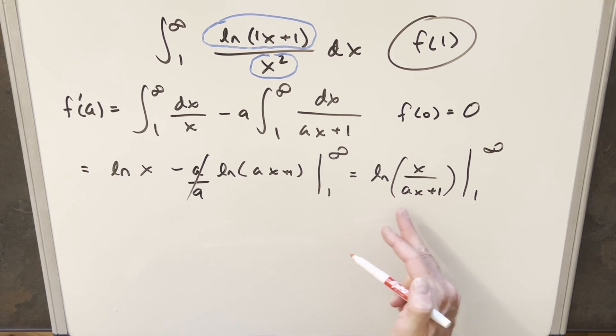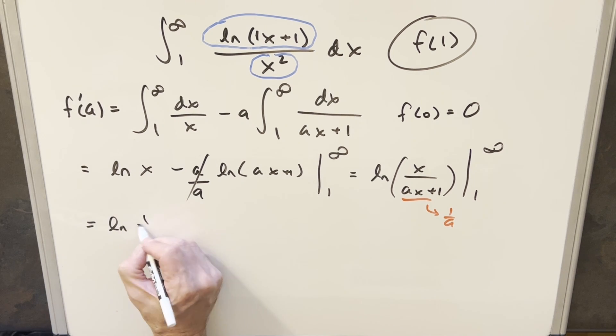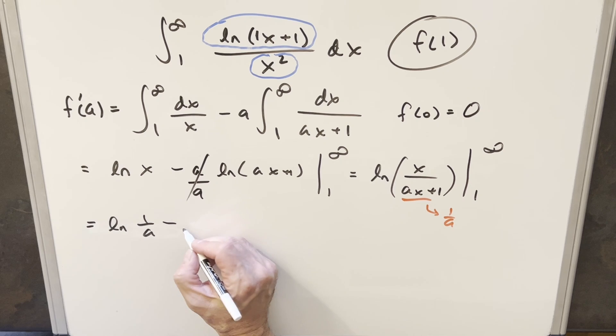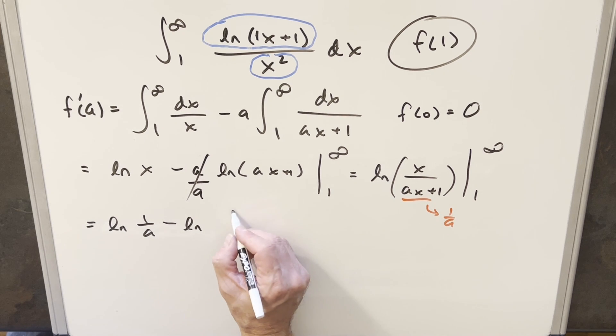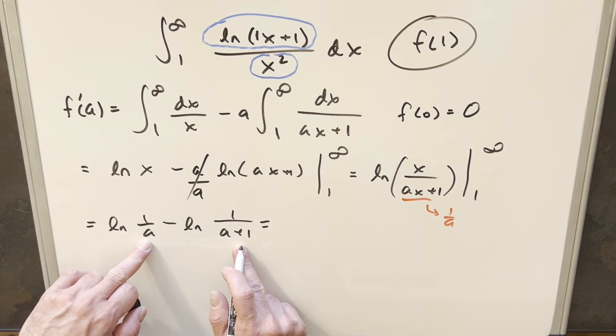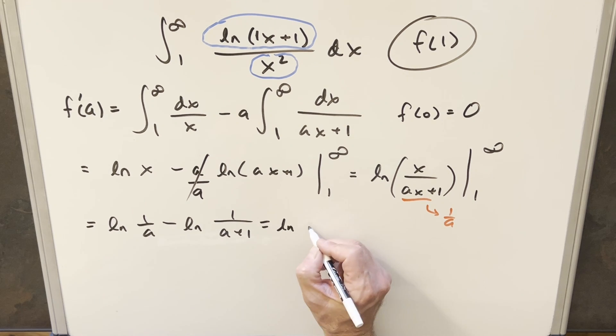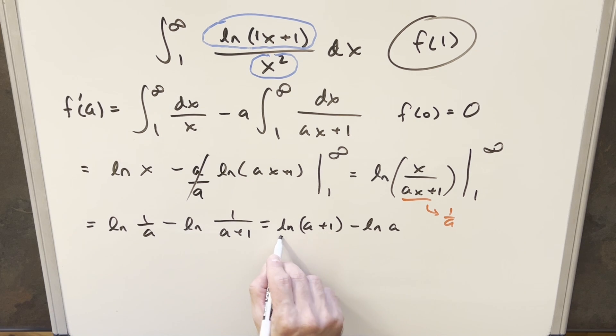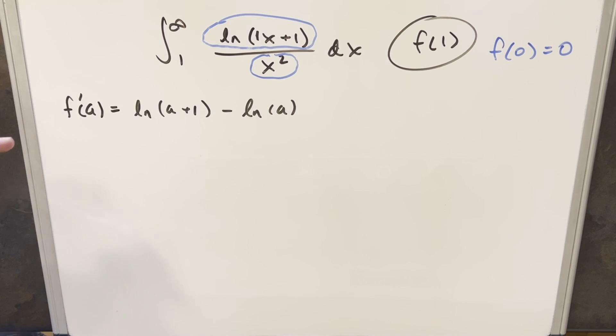Now when you plug infinity in here, the limit of this as x goes to infinity is just going to be 1 over a. So for this first piece, we're going to end up with natural log 1 over a. And then for the second part, we'll just plug in 1 and we get natural log of 1 over a plus 1. Because we have everything in the denominator, I can flip it and change the sign. So I can write this as natural log a plus 1 minus natural log of a. And so this right here will be our f prime of a value.